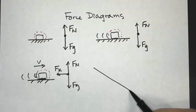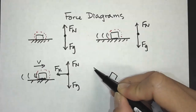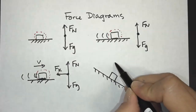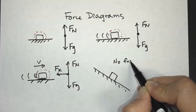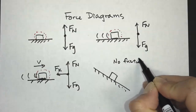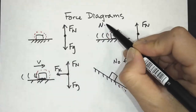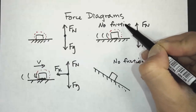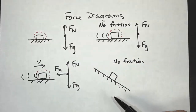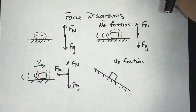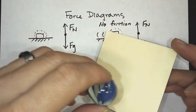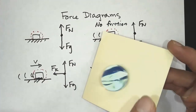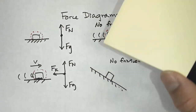Now let's take a look at a box that is sliding down a surface. Let's say that there is no friction. As you can imagine, if there's no friction — here I have a marble — it's just going to roll down faster and faster.